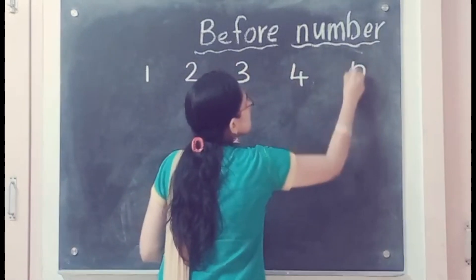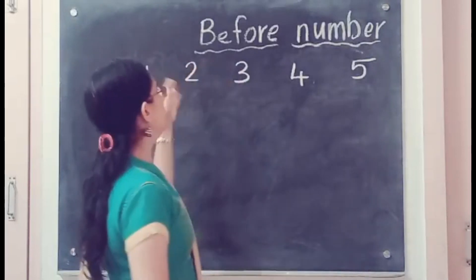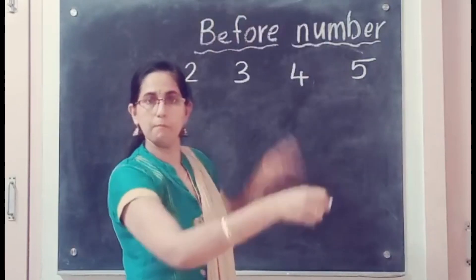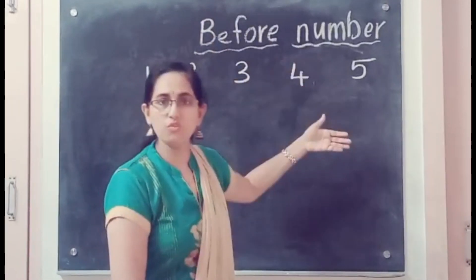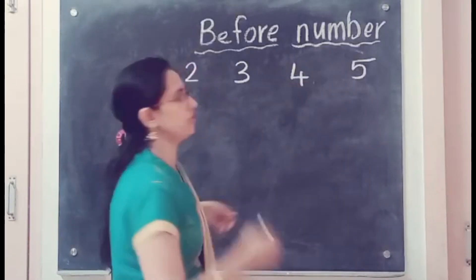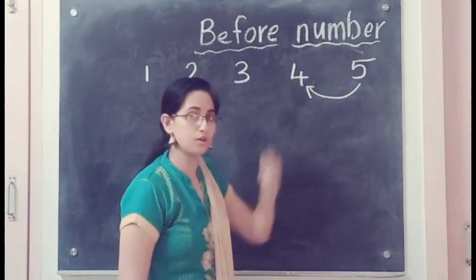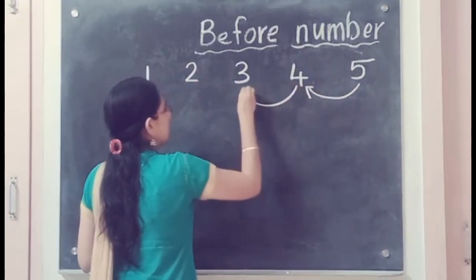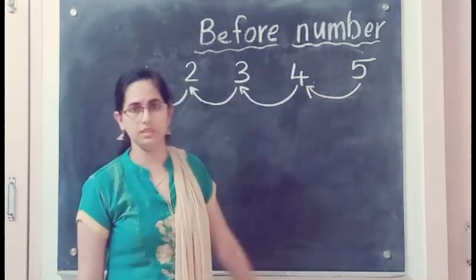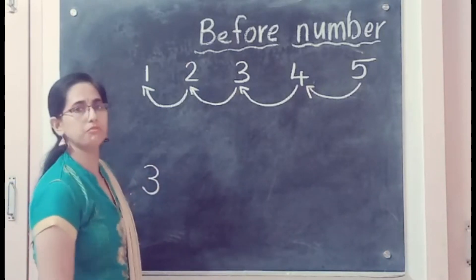4, 5 — first we will start with 5 numbers, okay. 1, 2, 3, 4, 5. Number 3 — okay, what comes before number 3? Before number 3, before...